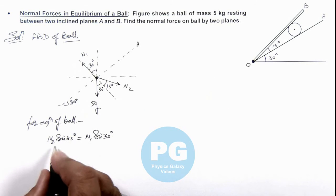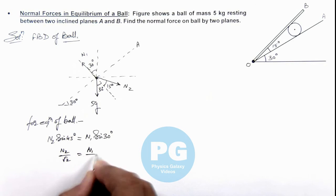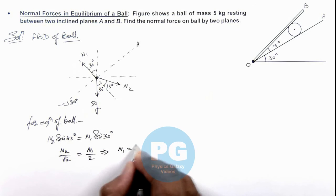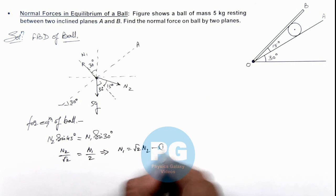So this will give us N₂/√2 equals N₁/2, or this will give us N₁ equals √2 N₂. Say this is our first equation.